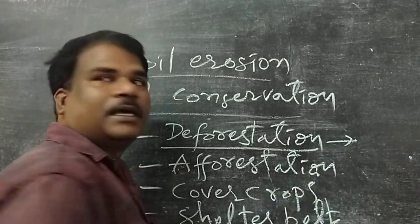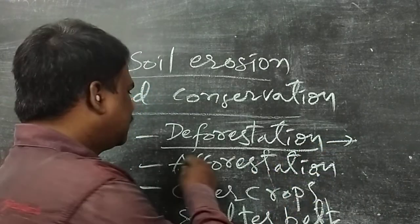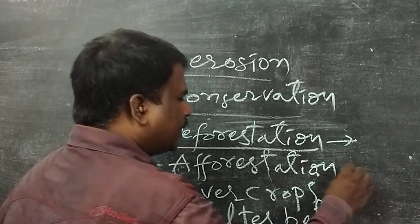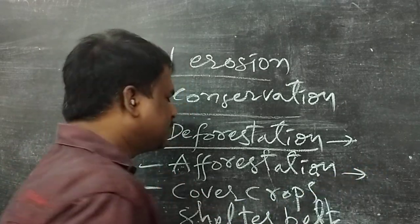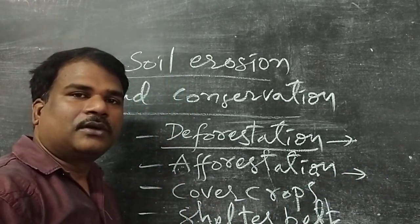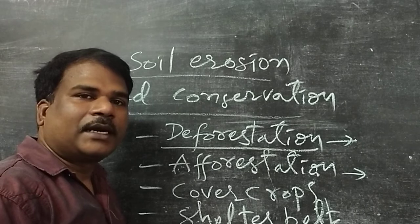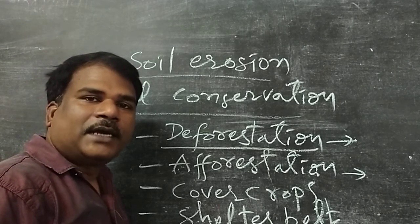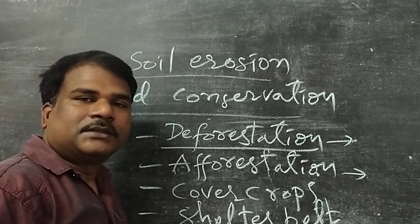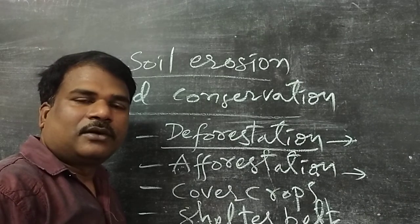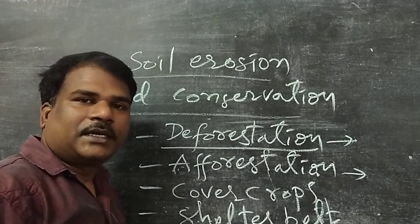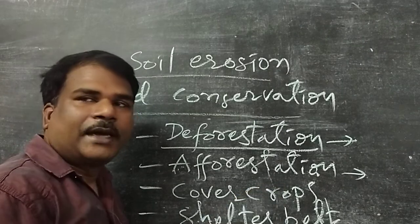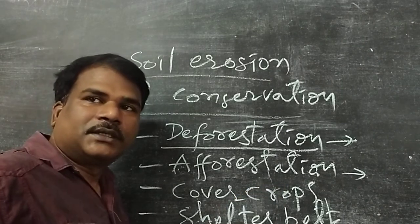We have to grow plants in barren land. Barren land means there is no plants and animals, and plants cannot grow in such an area. When we grow plants in barren land, it is called afforestation.